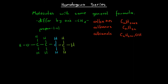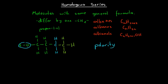An interesting thing that results as we move through a homologous series, continually adding CH2 groups, is that this has an effect on the polarity of our molecule. If we're dealing with a small alkanol such as ethanol, the hydroxyl functional group is very polar. This O-H bond is very polar because oxygen is much more electronegative than hydrogen, and so a small molecule like ethanol will be a very polar molecule due to the high polarity of the hydroxyl functional group.